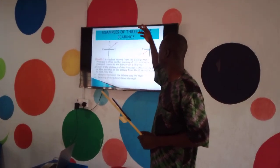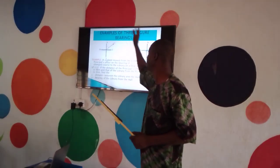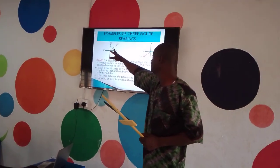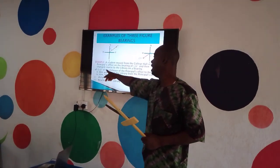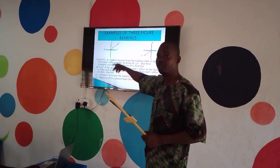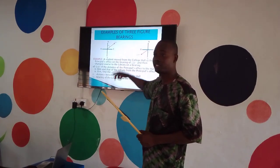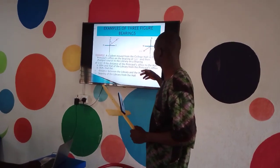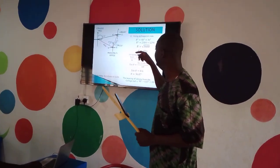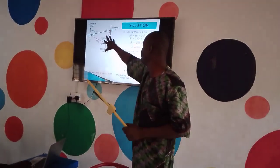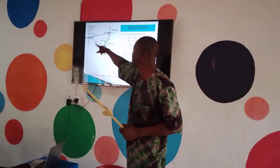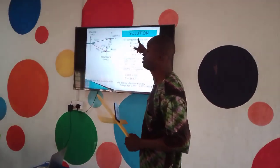Next, this is an example of a three-figure bearing using the same diagram. I am giving an example to demonstrate this. The interpretation of that problem — this is the diagram, this is the solution.